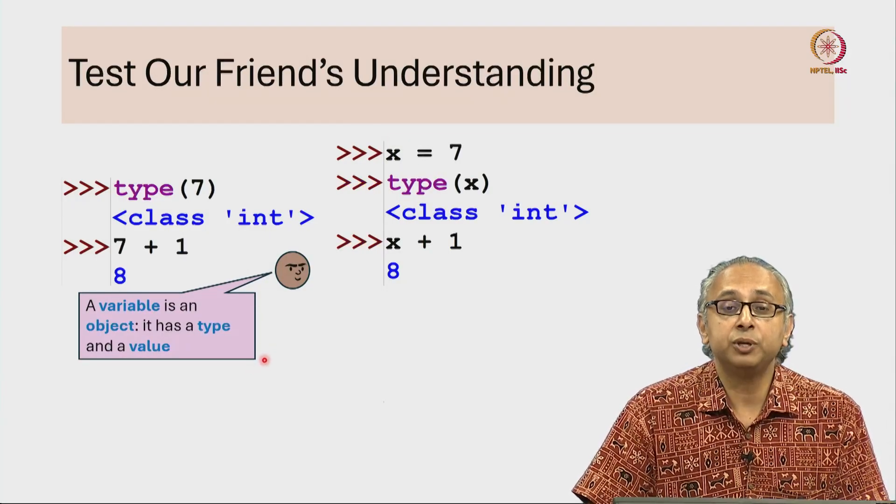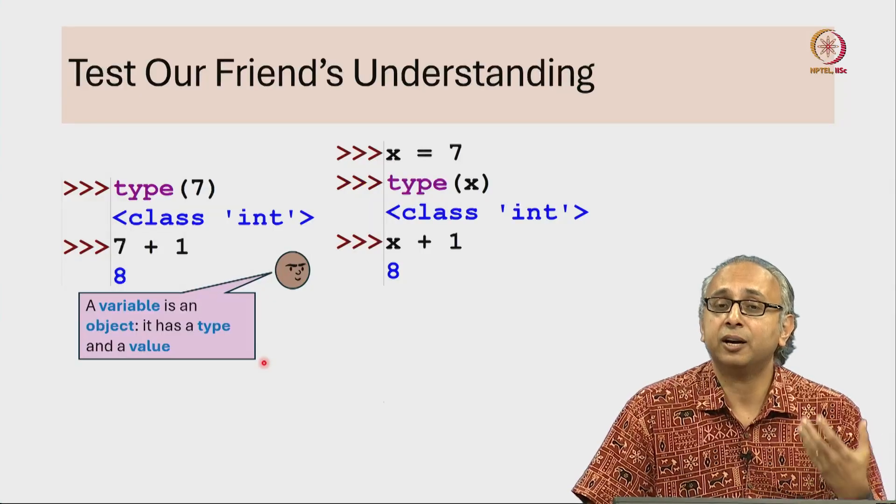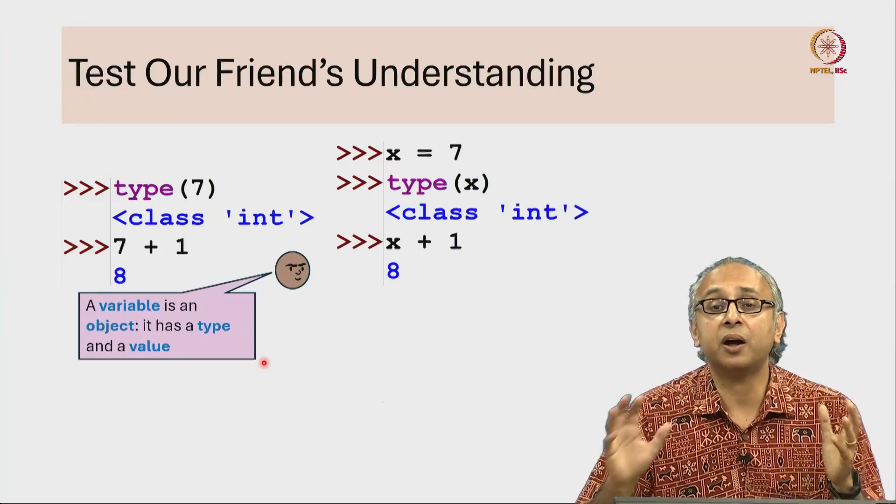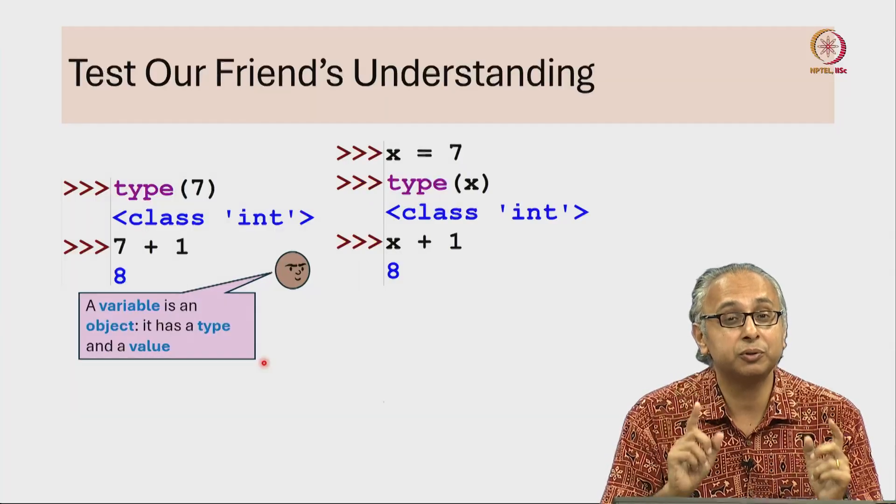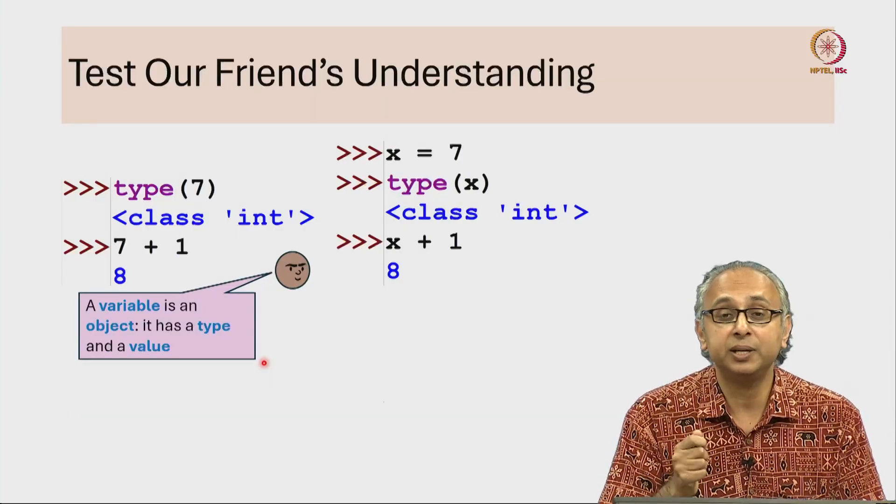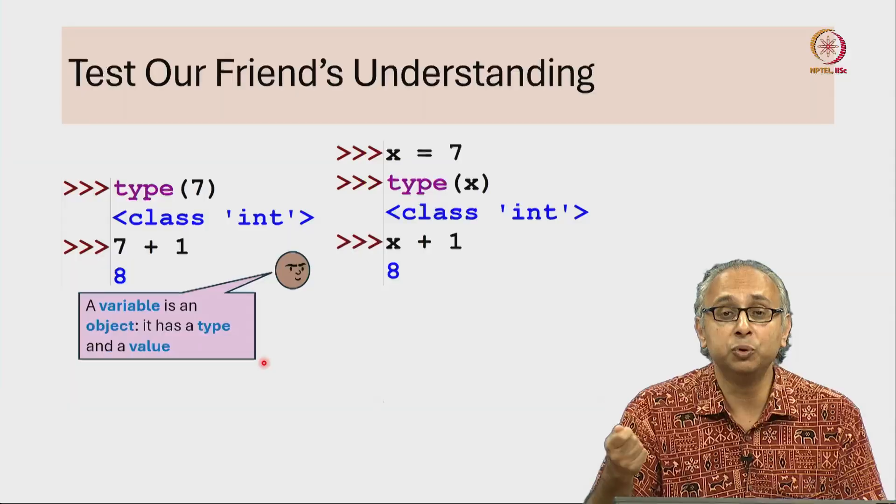Our friend is doing this experiment and believes that a variable and the object that it labels are the same thing, but it's important to remember that a variable is just like the baggage tag - it can be moved.